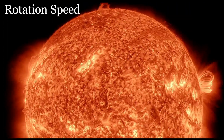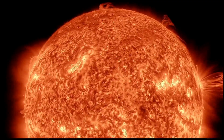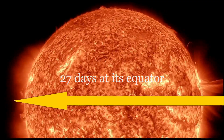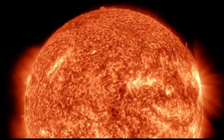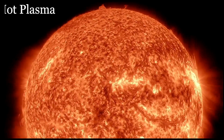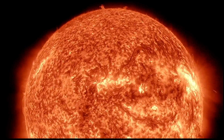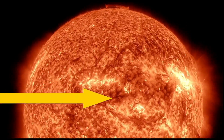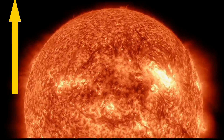Rotation speed is how fast a celestial body spins on its axis. The Sun, for example, rotates roughly once every 27 days at its equator, but this speed varies with latitude. This difference happens because the Sun isn't a solid body like Earth — it's a giant ball of hot plasma, which allows different parts to rotate at slightly different speeds. The Sun's equator bulges slightly due to its rotation, and this bulge creates a faster spinning motion there compared to the higher latitudes.